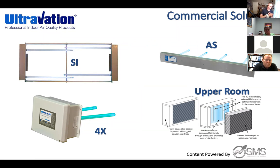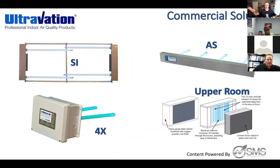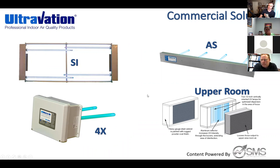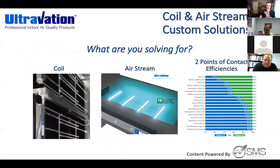Moving into commercial — this is important right now and Wes and I have been working on a couple of projects. All of Ultravation's commercial products are just called UV Matrix, with different versions: SI for surface area, AS for airstream, 4X for external NEMA 4X-rated waterproof enclosure applications when the equipment is too small to house everything internally, and upper room for wide open spaces. Whether you're a salesperson or contractor, always ask: what am I solving for? You can go coil or dedicated airstream. Per that earlier chart, if people want maximum disinfection rate for bacteria and viruses, you've got to be looking at both situations.